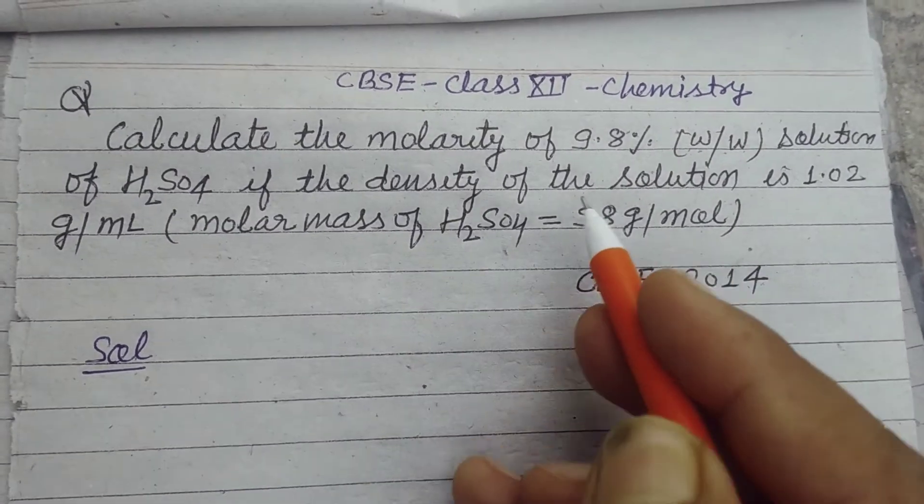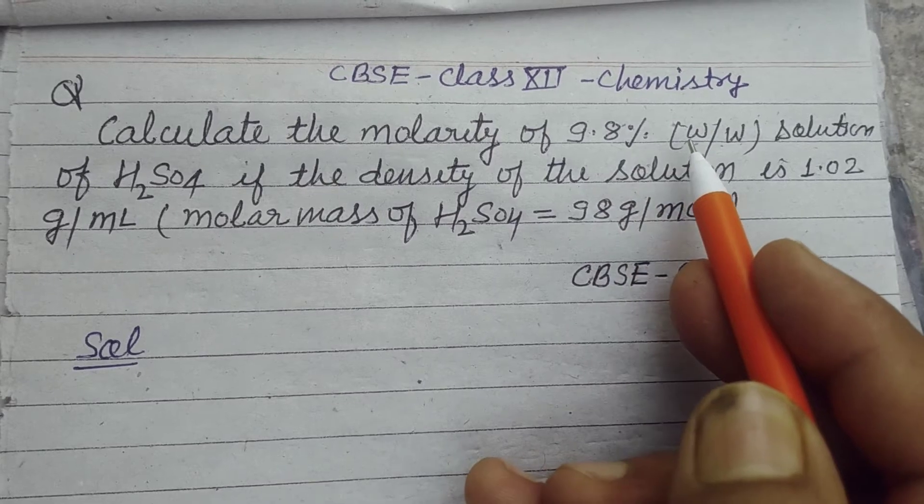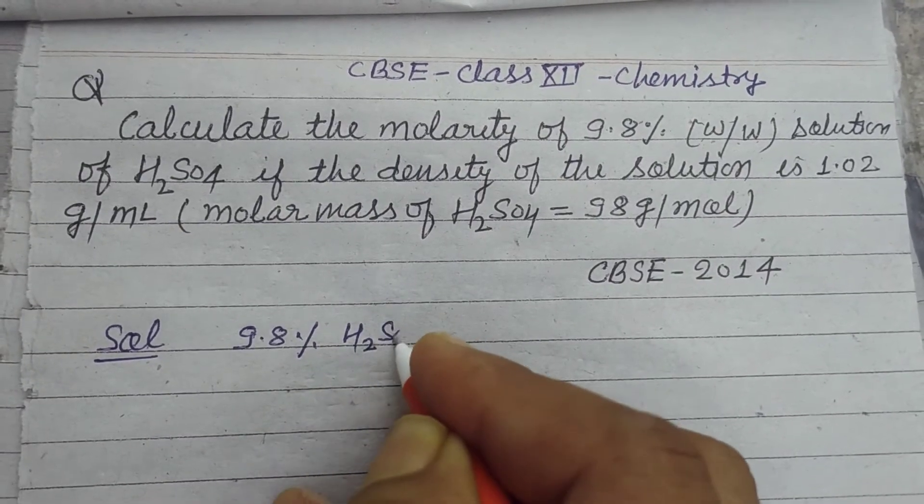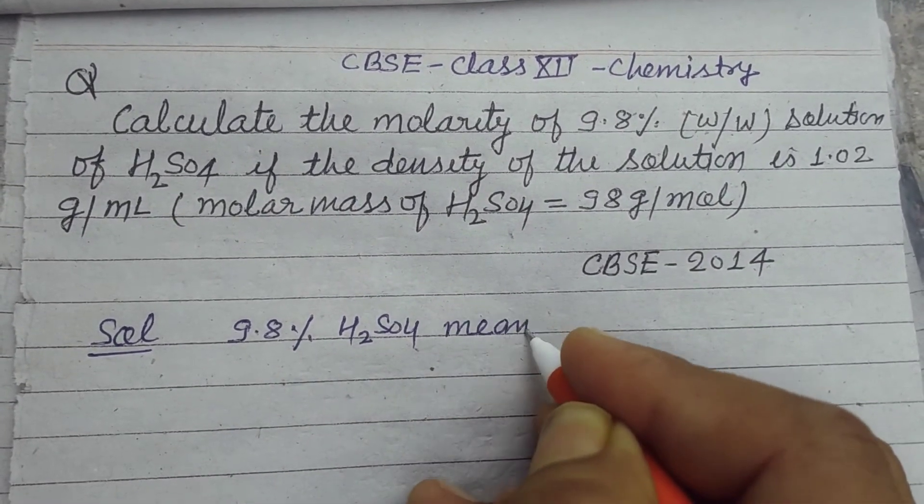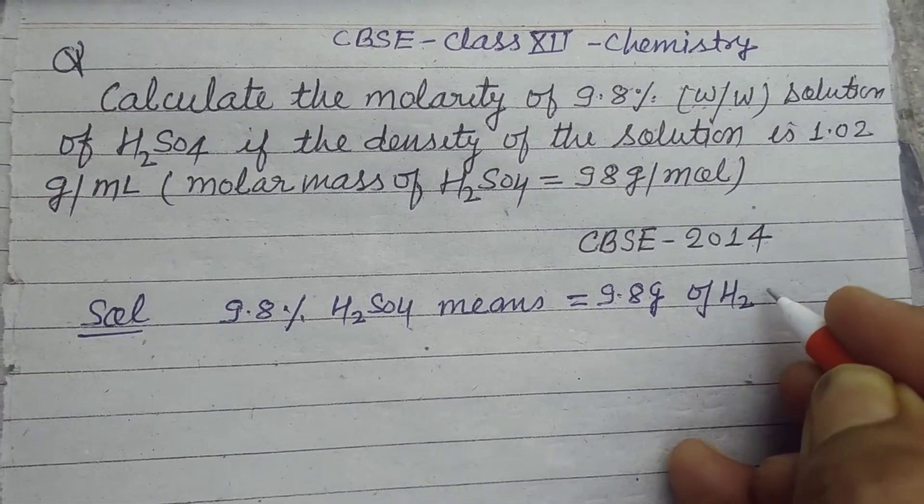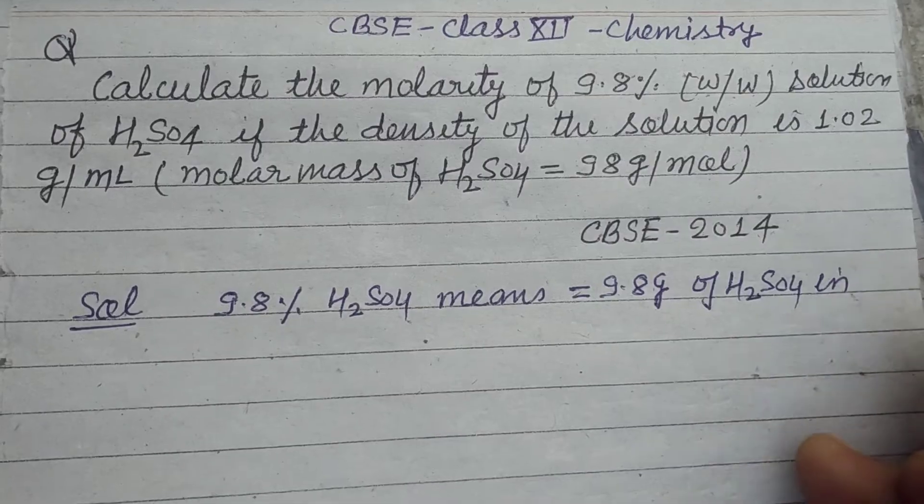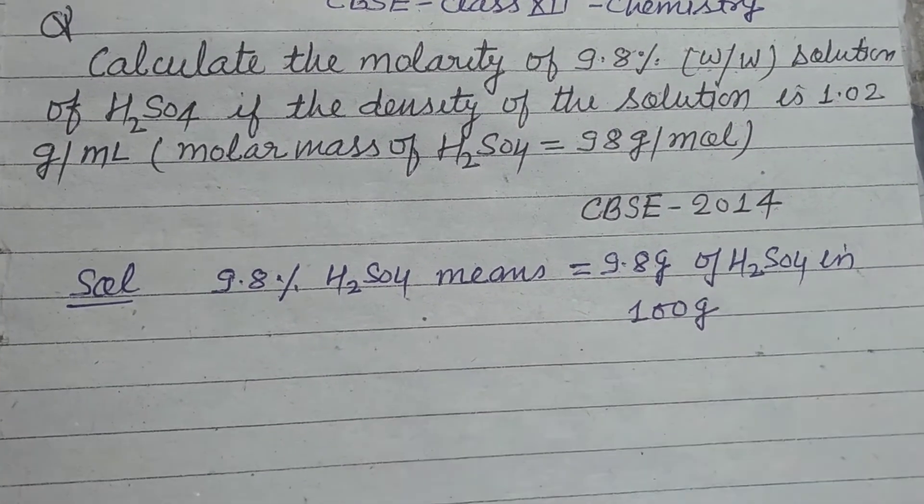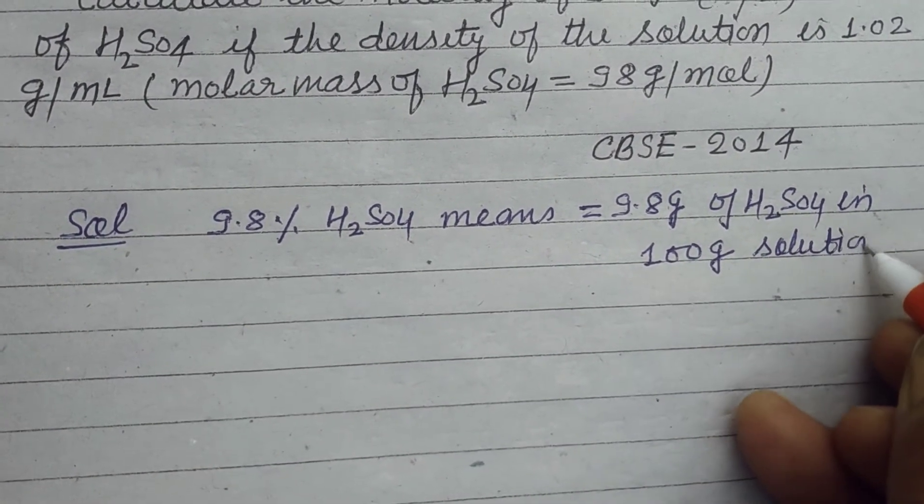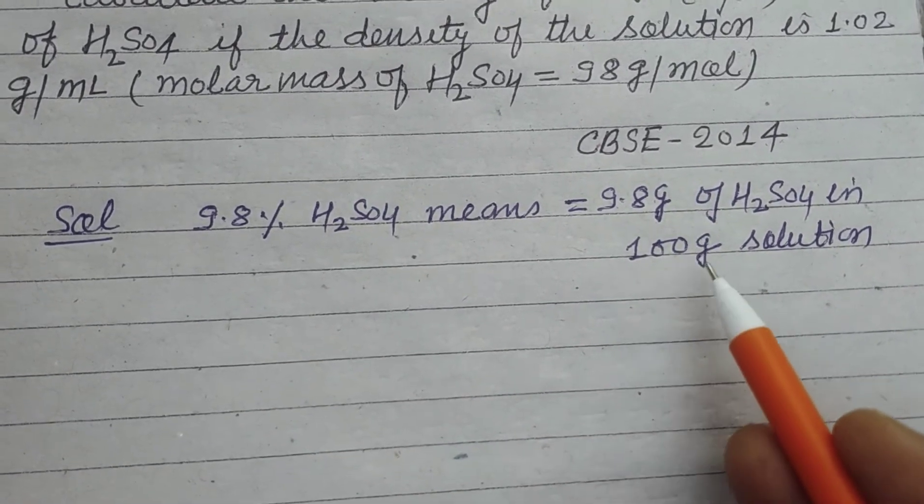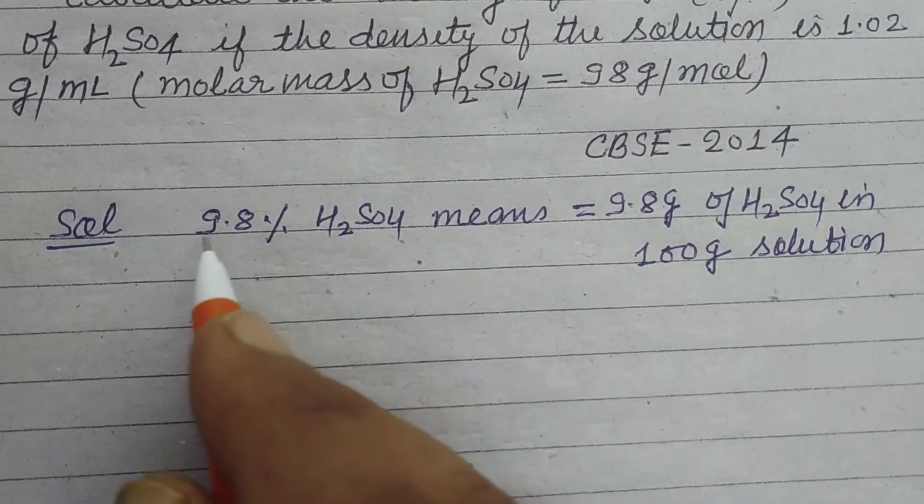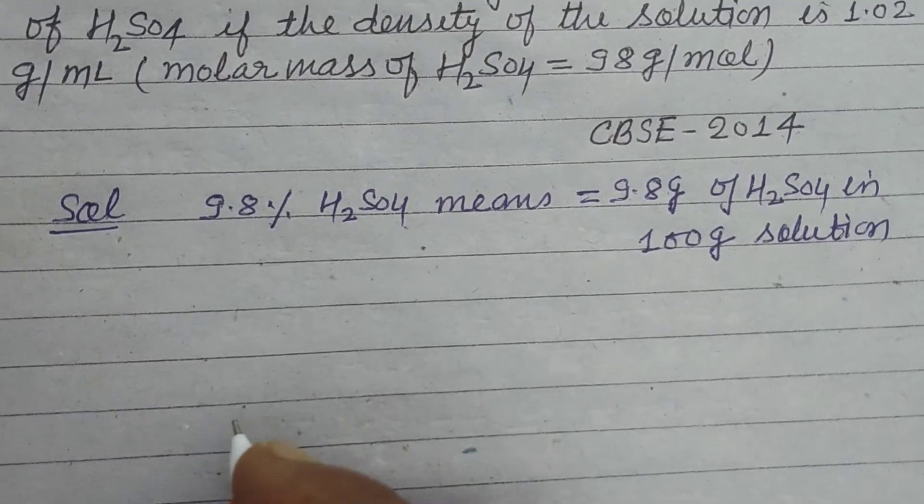So students, here it is given that 9.8% weight by weight. So 9.8% H2SO4 means 9.8 grams of H2SO4 in 100 grams solution. So 100 gram solution contains 9.8 grams of H2SO4. This is the meaning of 9.8% H2SO4.